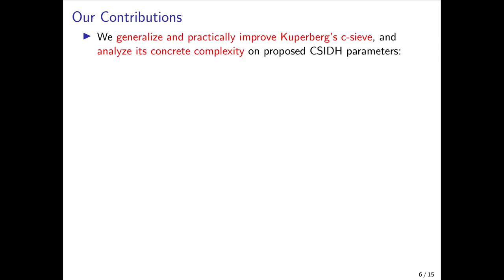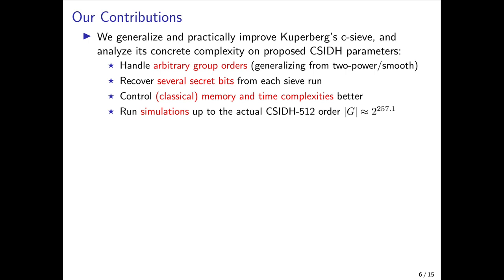That brings us to this work, in which we generalize and improve upon Kuperberg's collimation sieve in a number of different directions, and we analyze its concrete complexity on the proposed CSIDH parameters. In particular, we show how to generalize the collimation sieve to handle arbitrary group orders, generalizing from 2-power or other smooth group orders, and this is necessary for CSIDH because the group orders there frequently have huge prime divisors. We also show how to recover several bits of the secret key from each single run of the sieve, and we give some techniques for better handling the classical memory and time complexities after discovering some unexpected phenomena that occur in the sieve.